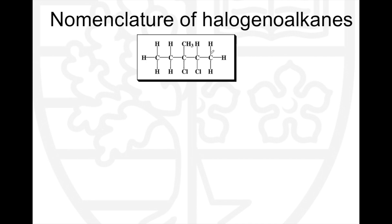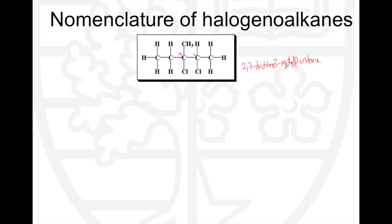I see five carbons. If counting from right to left — one, two, three, four, five — I get chlorine at positions two and three, and a methyl group at position three. Counting from the other direction gives positions three and four for methyl, which is worse. So the best choice is right to left. That gives us five carbons: pentane. We have a dichloro at positions two and three, and a methyl at three. Alphabetically chloro comes first, so the name is 2,3-dichloro-3-methylpentane.